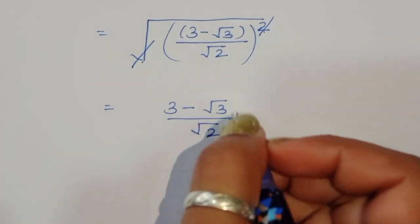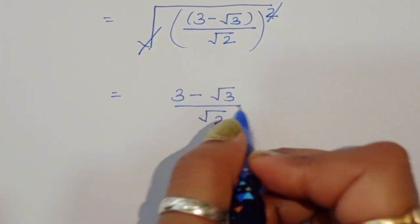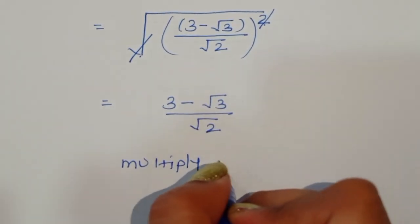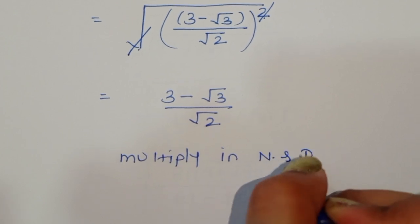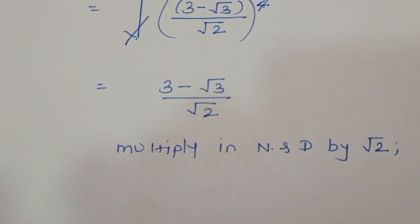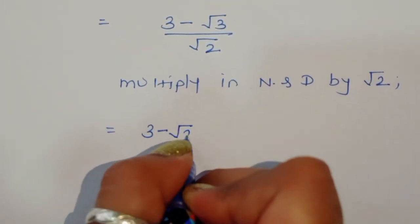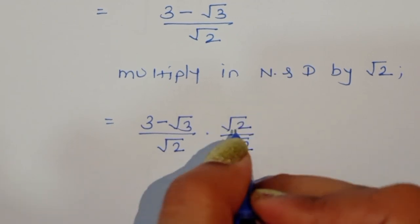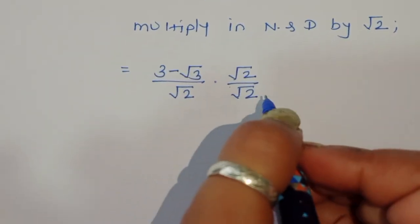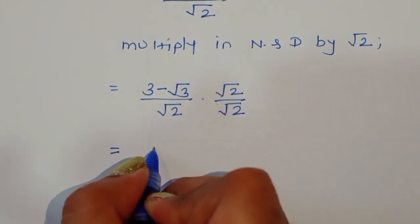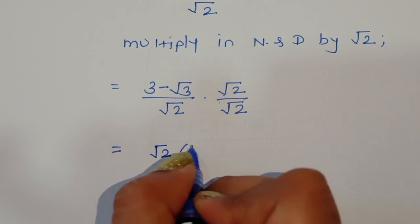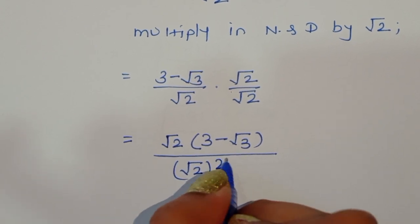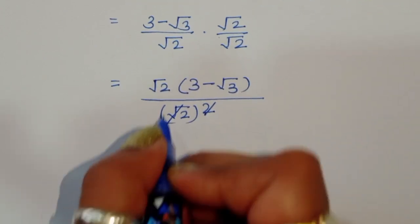Now we rationalize the denominator. We multiply the numerator and denominator by square root of 2. In the denominator, square root of 2 times square root of 2 becomes (square root of 2) squared, and the square cancels from the square root, leaving 2 times (3 minus square root of 3) divided by 2.